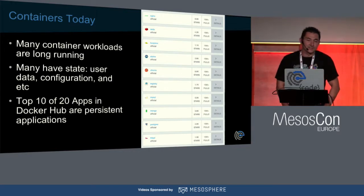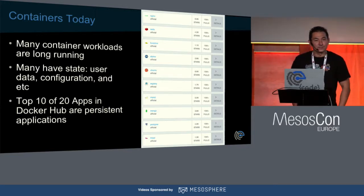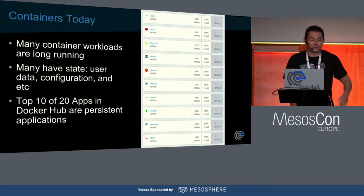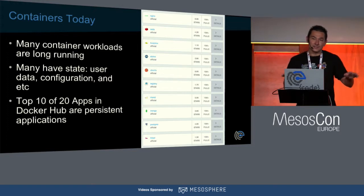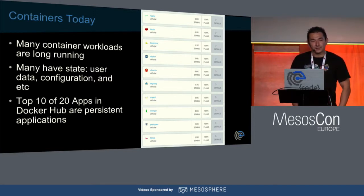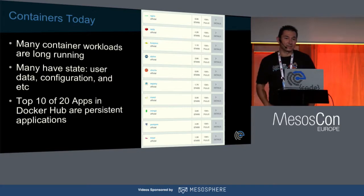If we look at the container ecosystem today, there's a good mix of transient applications and some that are long running. Whether transient or long running, they generate data. Sometimes that data is useful and you want to persist it; other times you can throw it away. That data can take many shapes and forms — user data like Postgres data, or simple things like configuration that varies between instances. Looking at the top 20 apps in the Docker store, 10 of those are persistent applications.